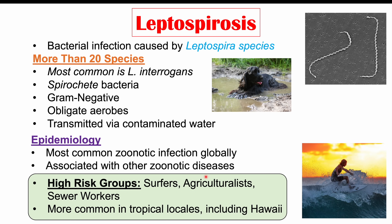Because of where this bacteria is located in the world and because it can be transmitted via contaminated water, certain high-risk groups are more likely to get infected. These include surfers, agriculturalists working in agriculture dealing with contaminated water — especially in places with less sanitary protocols — and sewer workers. Leptospirosis occurs more commonly in tropical locales, including Hawaii.